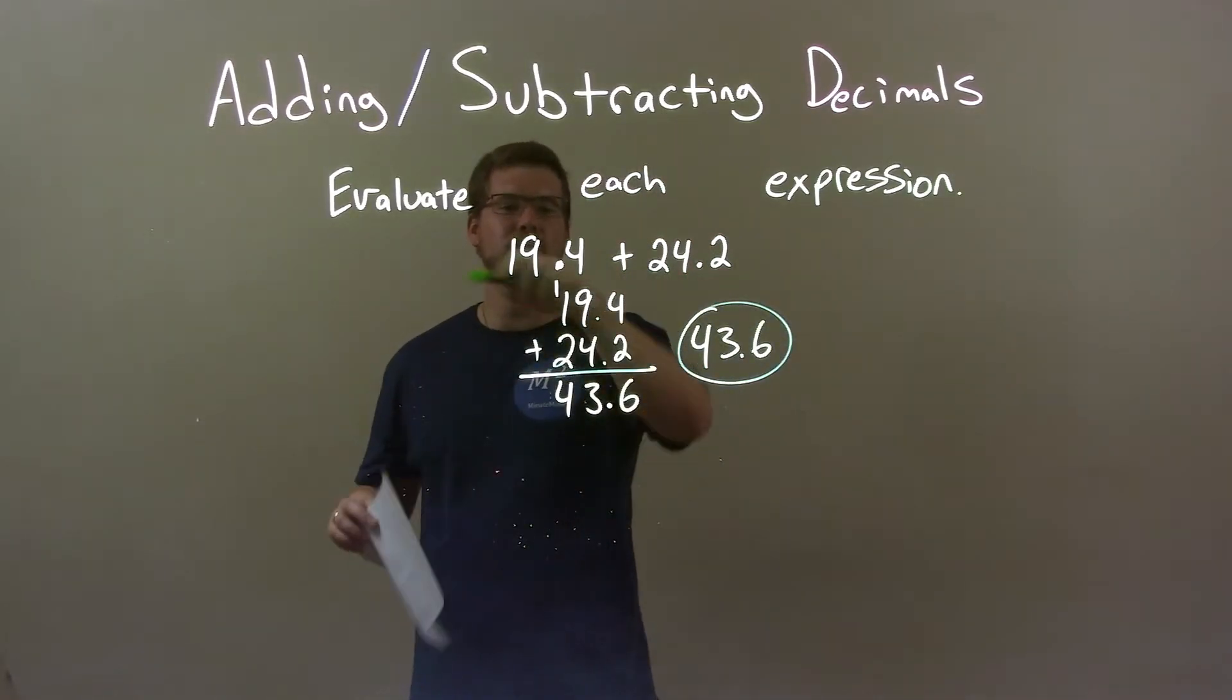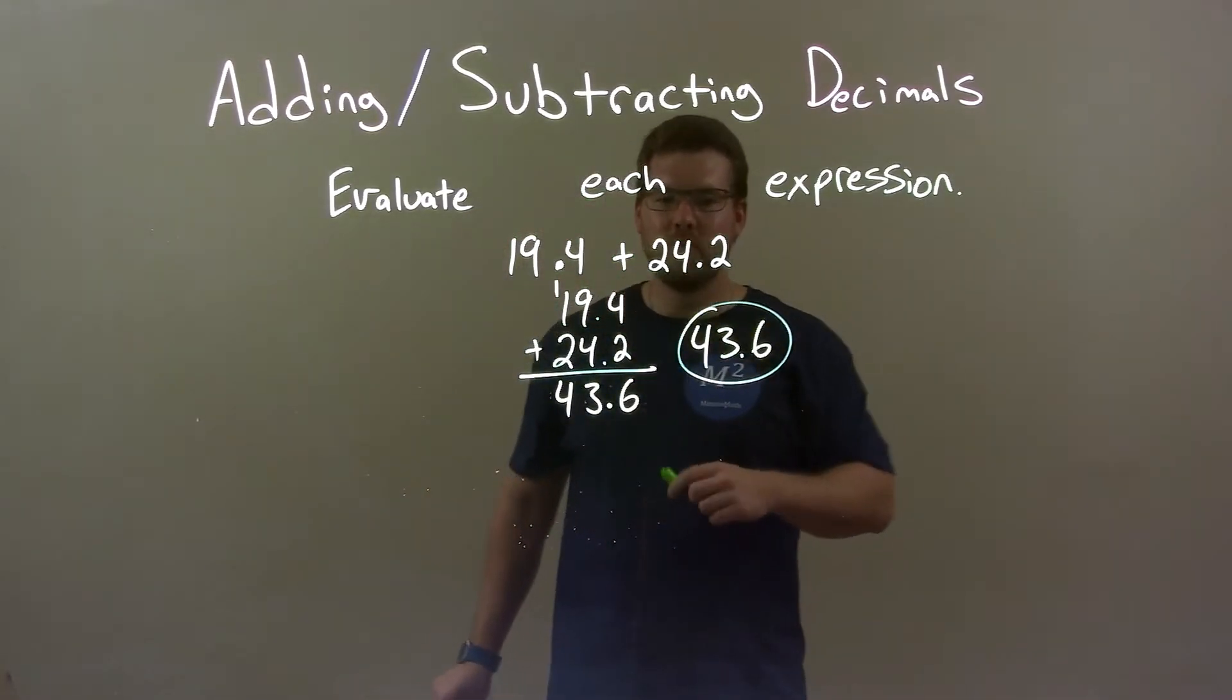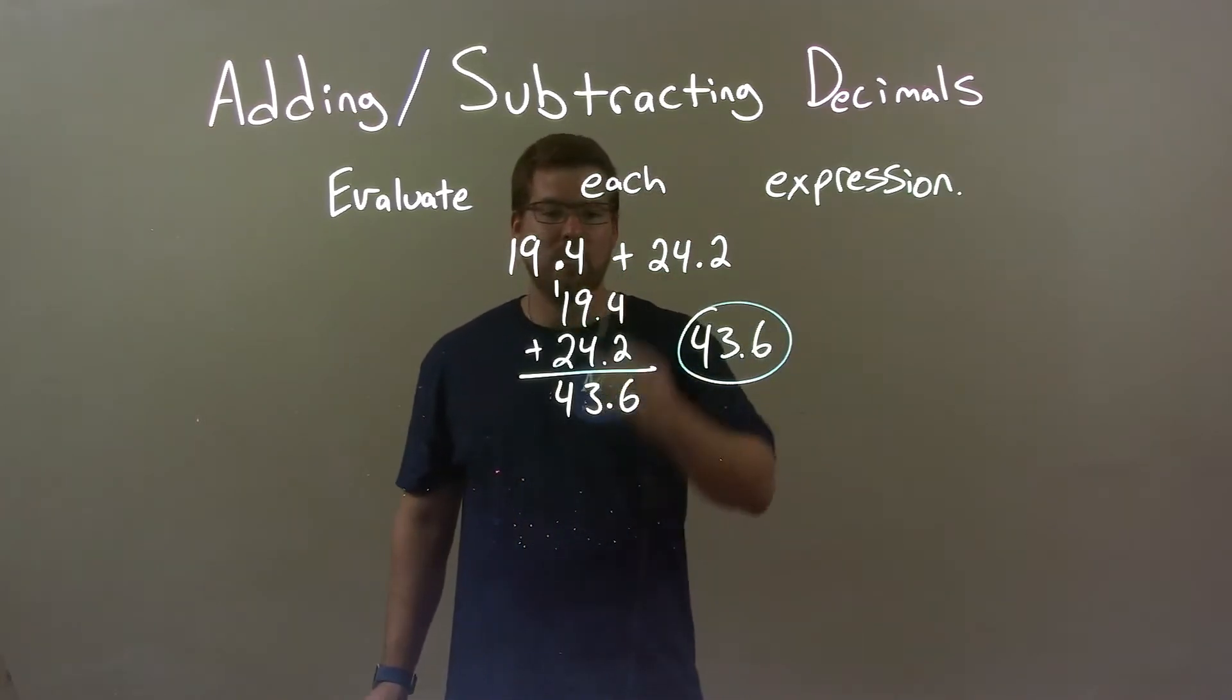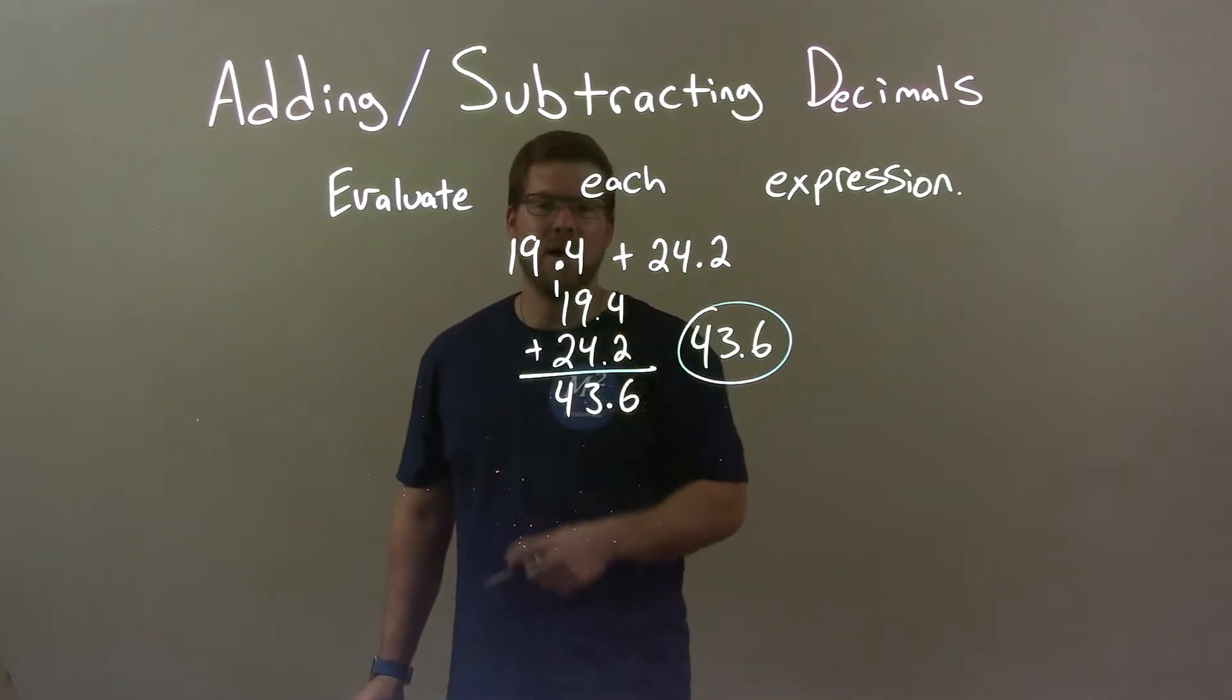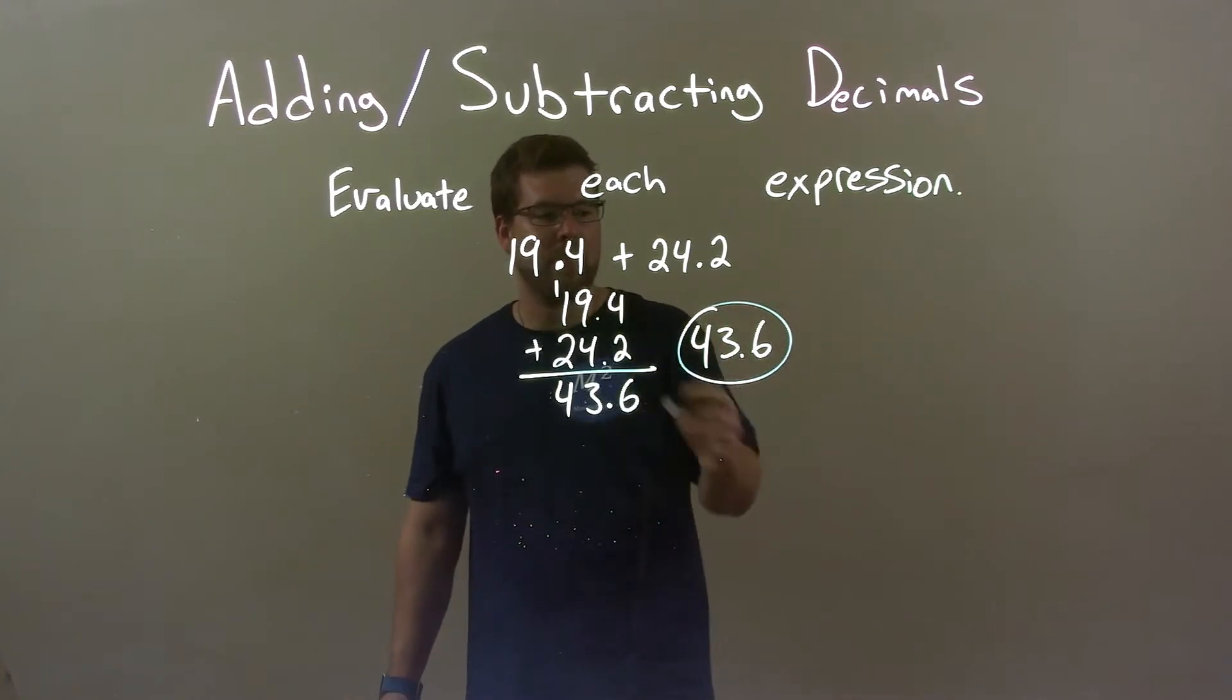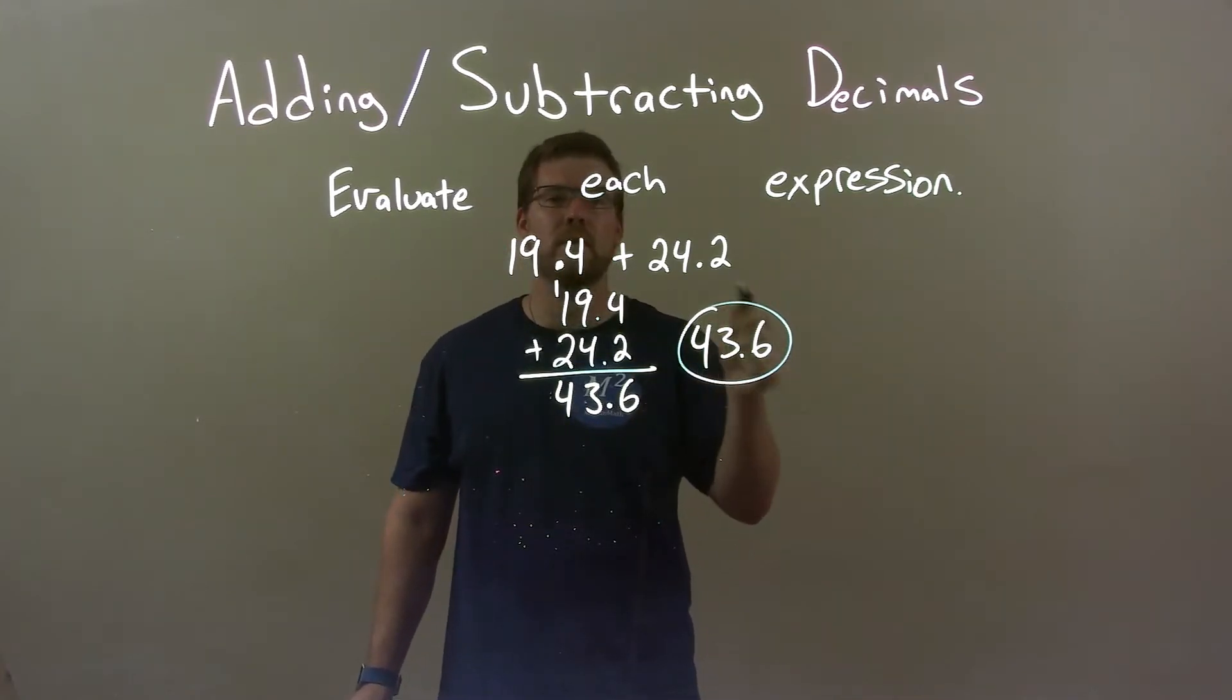So quick recap, we have 19.4 and we're adding 24.2 to that. Let's put one over the other, make sure the decimals are lined up, and add it like we always do. That gives me my final answer of 43.6.